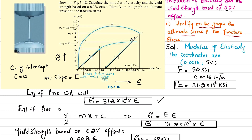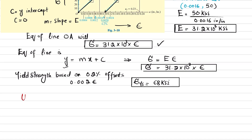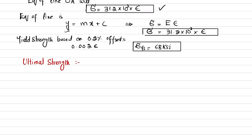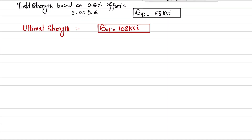Now we identify the ultimate strength and fracture strength on the graph. The ultimate strength is the maximum stress the material can bear. On the stress-strain diagram, the maximum stress occurs at point B, which equals σ_u = 108 ksi. So the ultimate stress is 108 ksi.